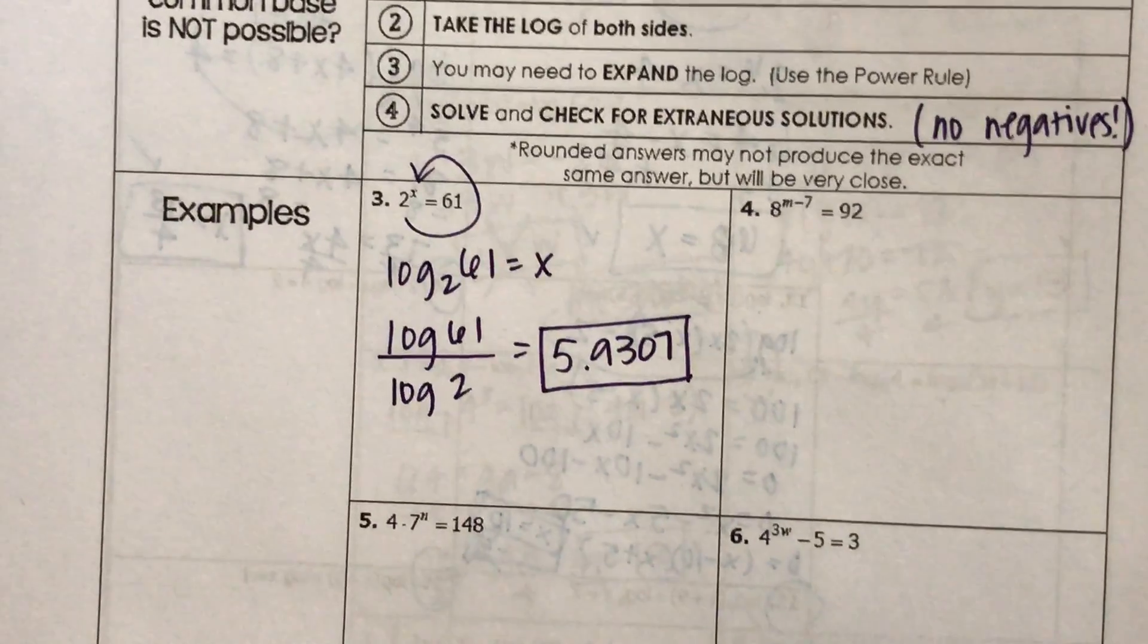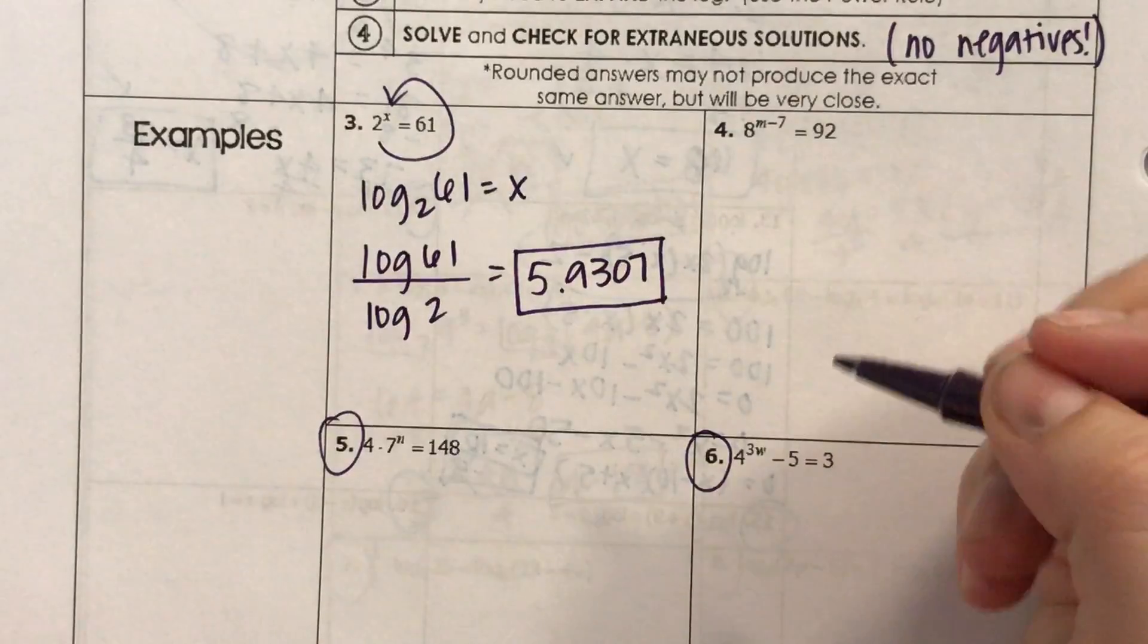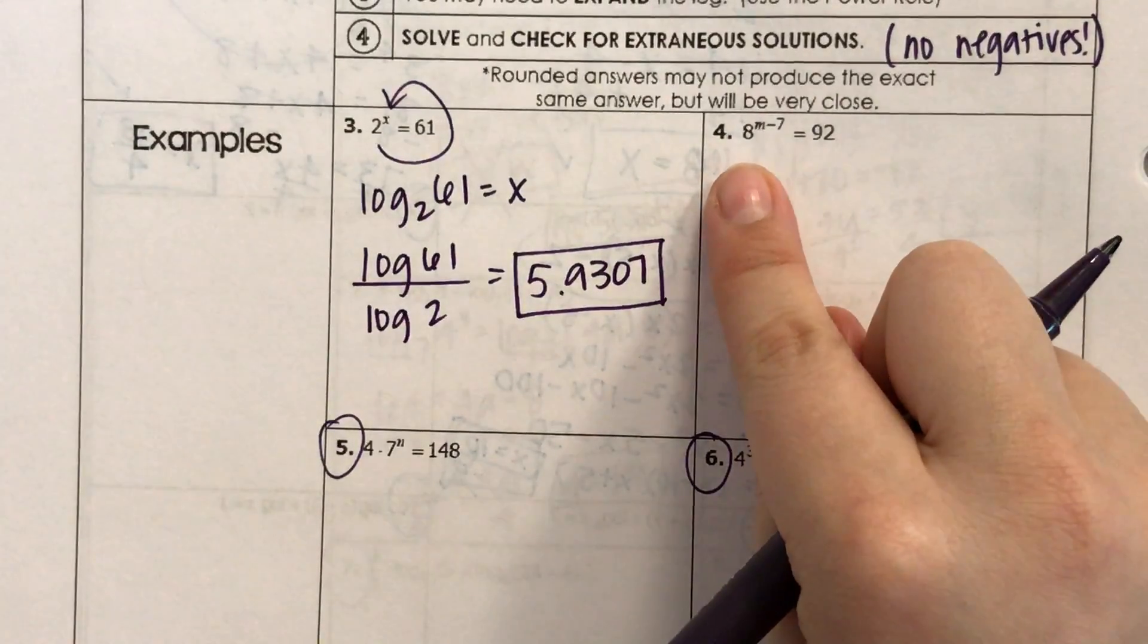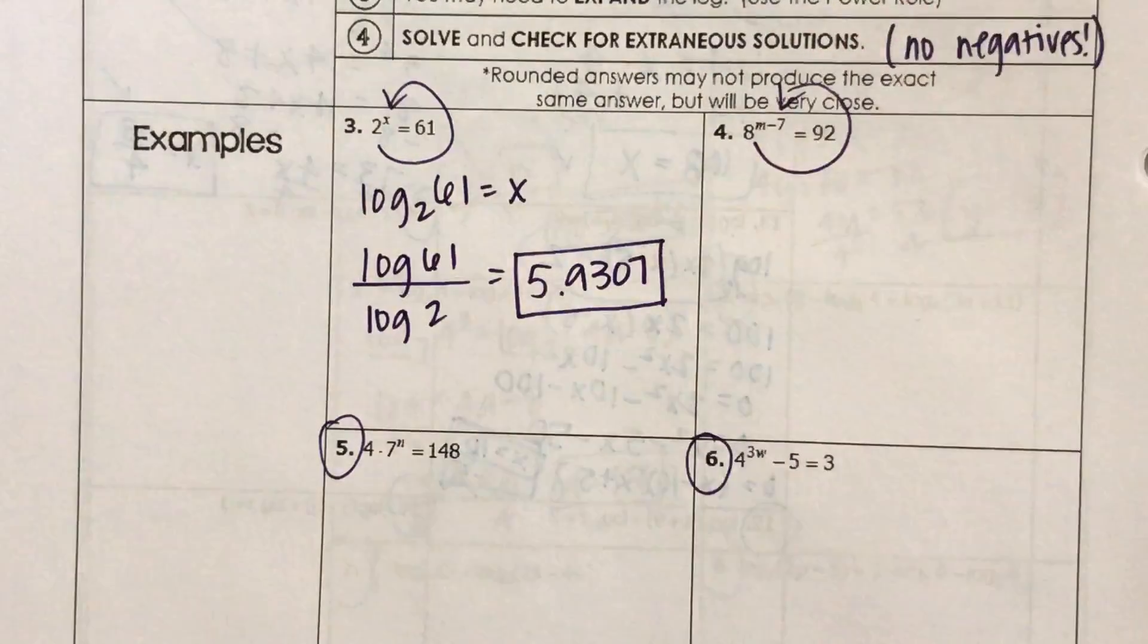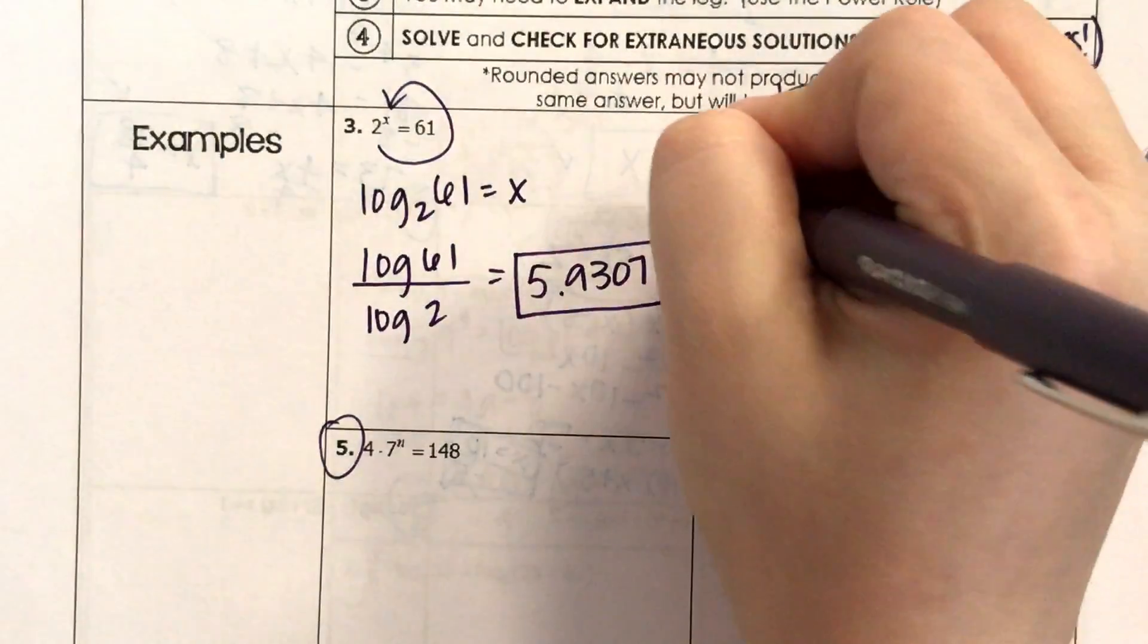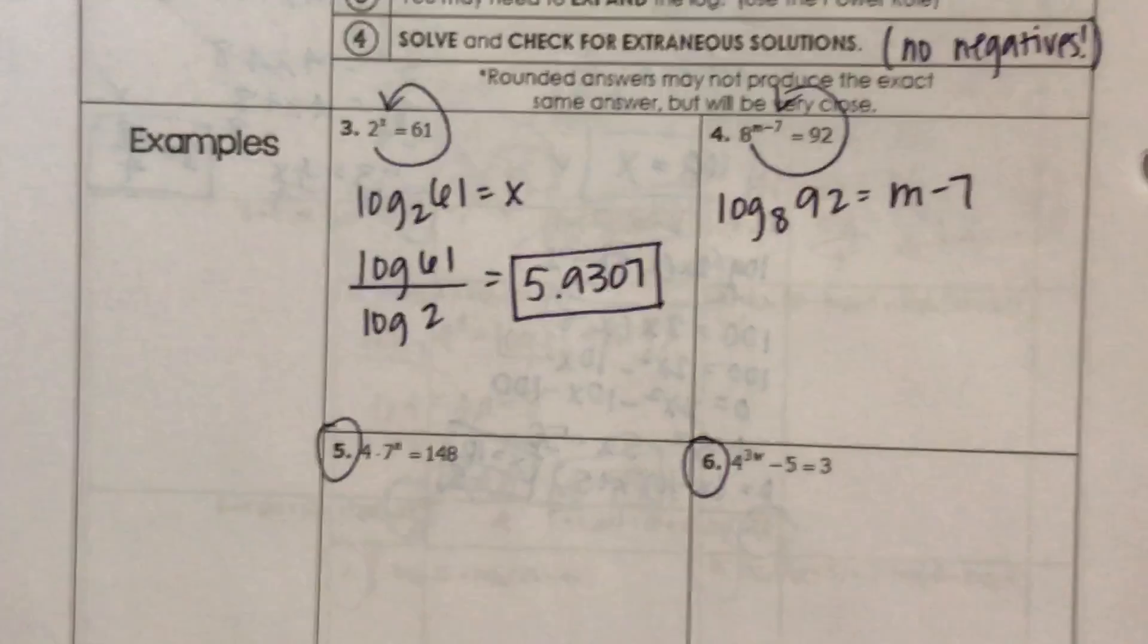We're going to do number 4, and then we'll do 5 and 6 together in class. So I have my exponential expression by itself, so we'll do the loop. Log base 8 of 92 equals m minus 7.